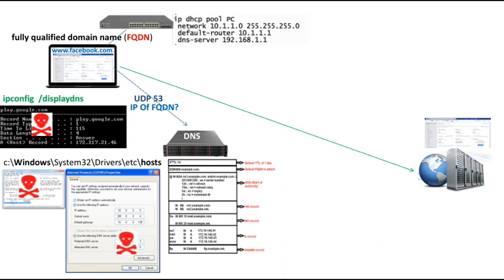An attacker can corrupt the DNS IP set in your network card, or corrupt the data of a zone file, so the DNS server will provide you with a false IP address of facebook.com and redirect you to a false website set up for phishing purposes. An attacker can also corrupt the DHCP settings to indicate a false IP address of a DNS server, so instead of the actual DNS server you would approach the wrong one.